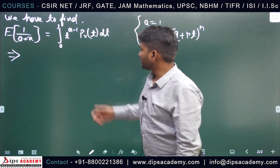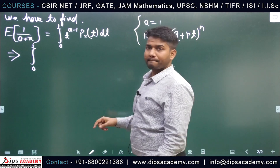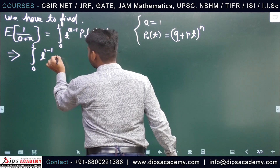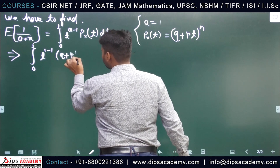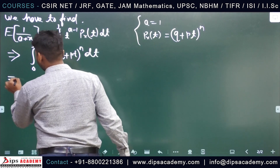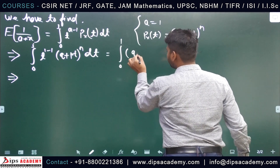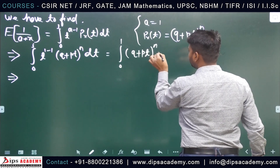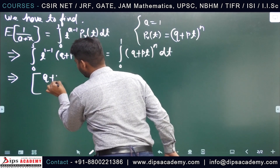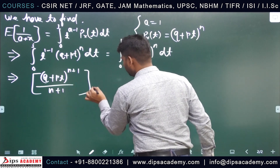So we can write this as the integral from 0 to 1 of (q + pt)^n dt. After integration we get: (q + pt)^(n+1) divided by (n+1) times p, evaluated from 0 to 1.